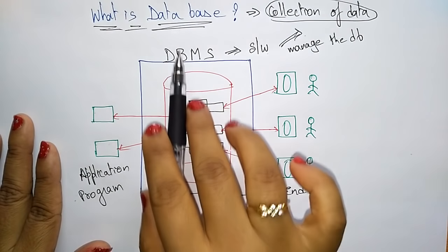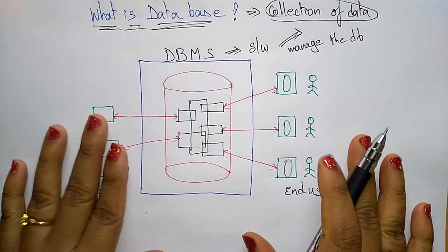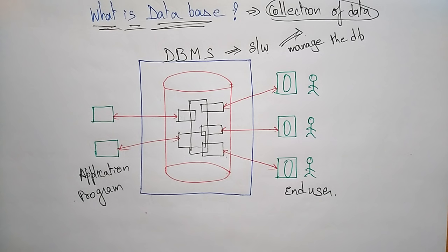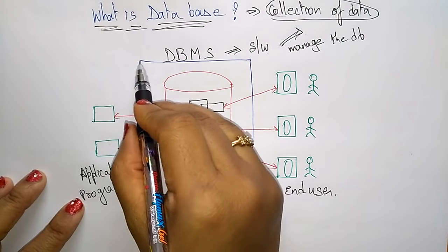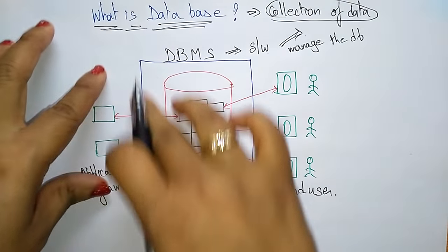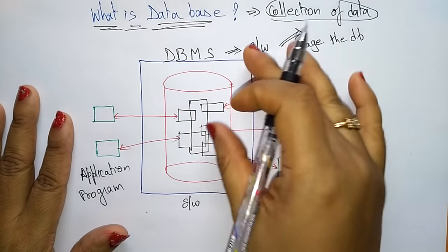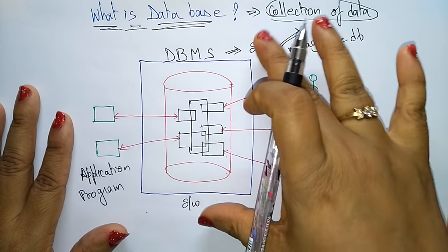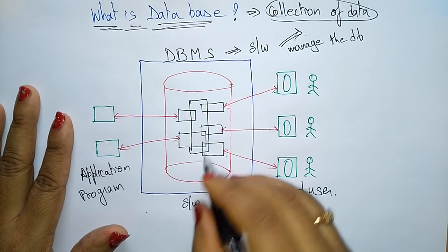So what is the relation between the database and database management system? Now, where will the database be stored? Everyone is confused. The database management system is a software, and we are seeing some end users and some application programs. Let us think this complete block is the database management system software. Inside the DBMS, with the help of this software, we are storing data.